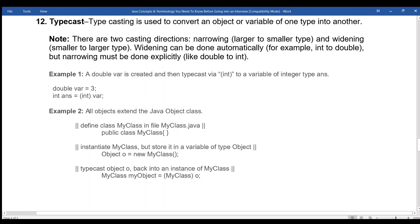Example 2: All objects extend a Java Object class. Define class MyClass in file MyClass.java: public class MyClass. Instantiate MyClass but store it in a variable of type Object: Object o equals new MyClass. Typecast object o back into an instance of MyClass: MyClass myObject equals MyClass o.